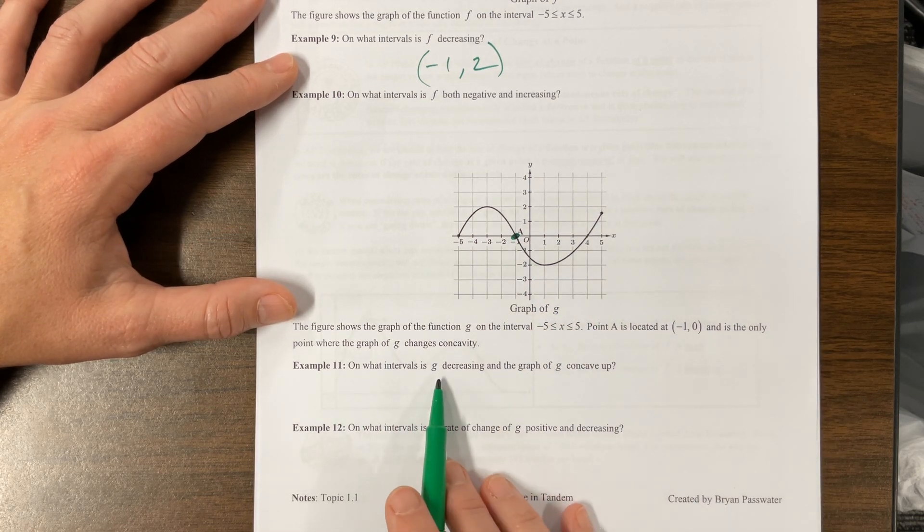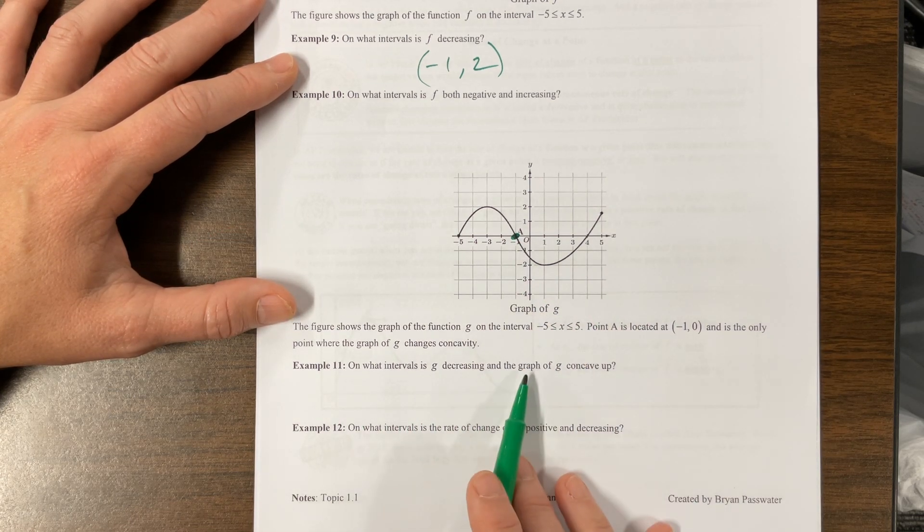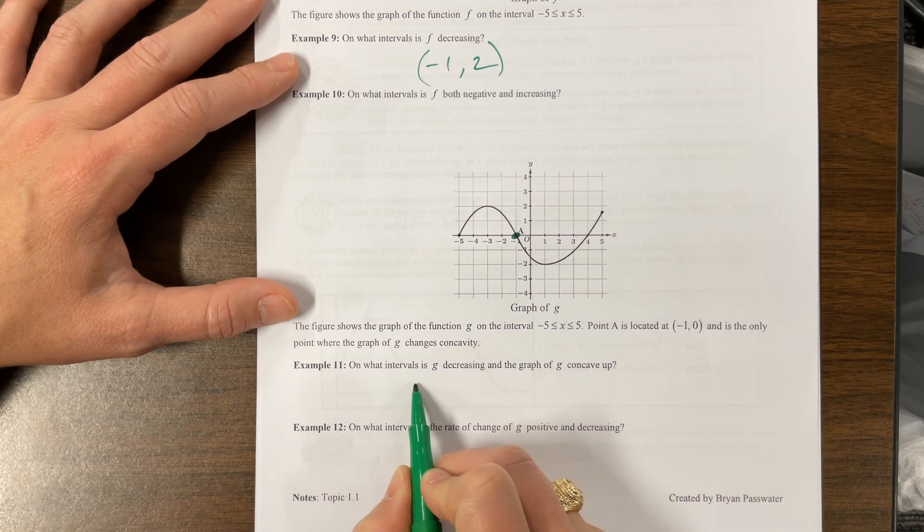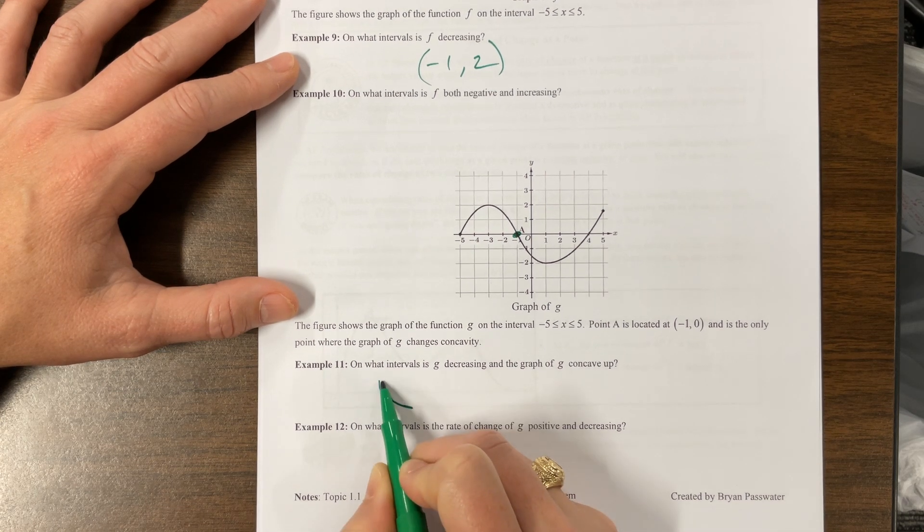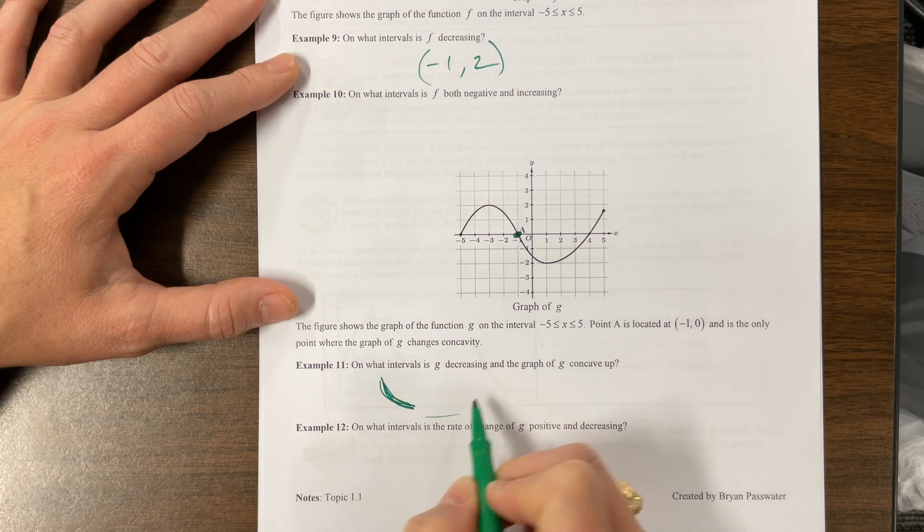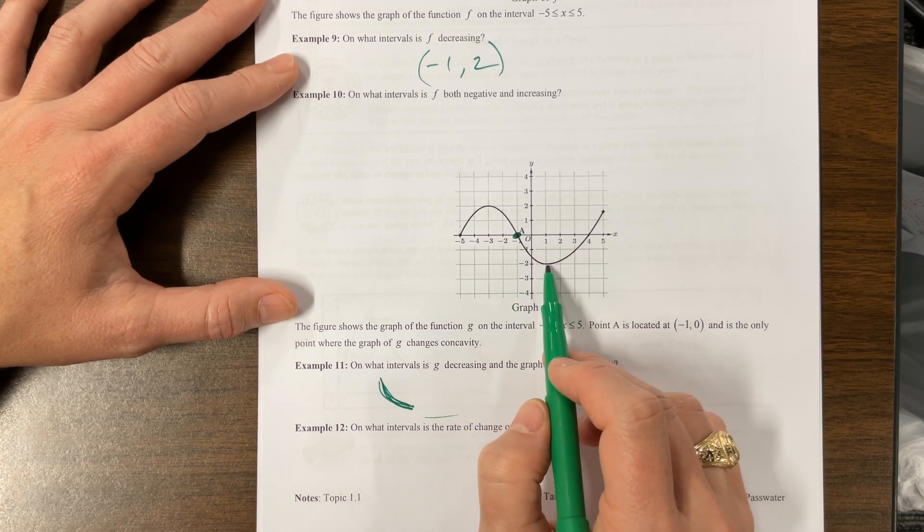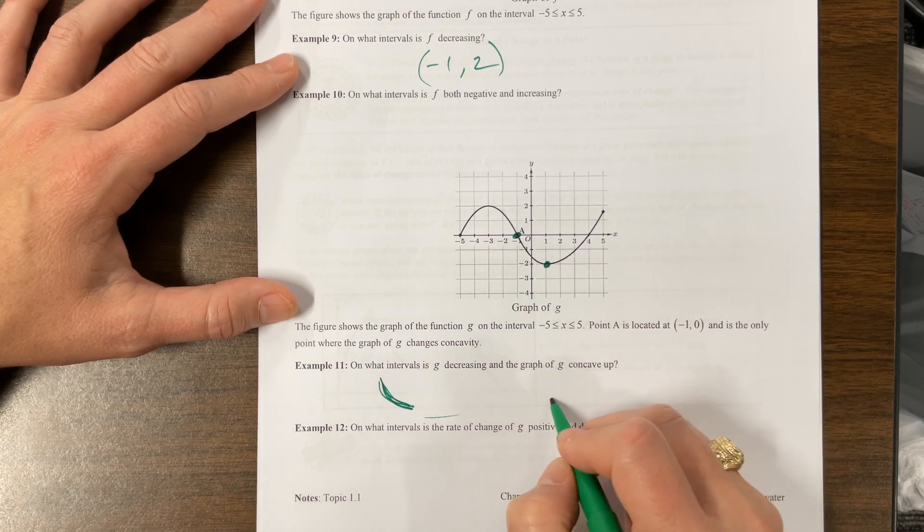On what interval is G decreasing in the graph? So we want G to decrease in the graph to be concave up. So it should look something like this, decreasing and concave up. Where do we look like this from here to, that looks like it's going to one. So negative one to one.